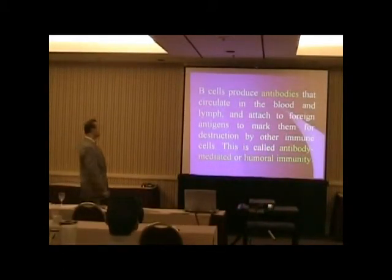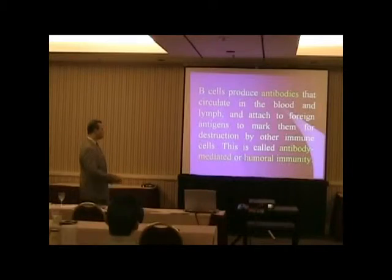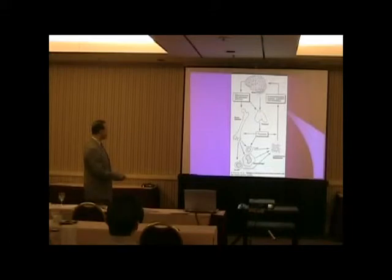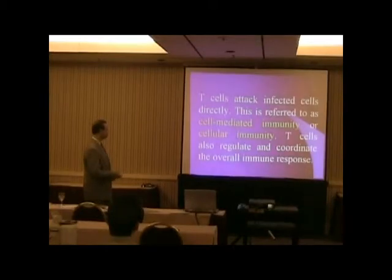B cells produce antibodies. These circulate the blood and lymph and attach to foreign antigens to mark them for destruction. This is called antibody-mediated or humoral immunity. This chart shows B cells from the bone, the thymus creating thymocin which stimulates the production of T cells. We'll talk about cytokines in a moment.